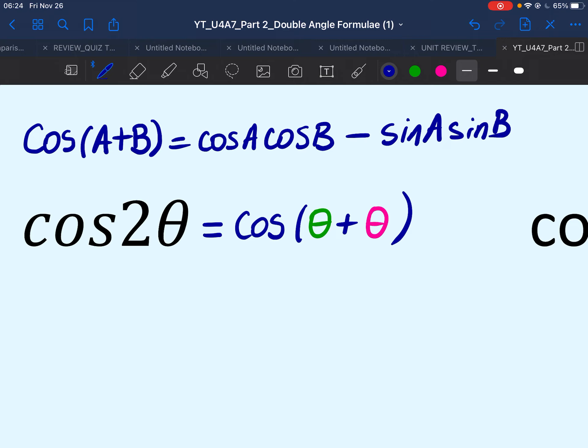So in our case, we'll say that cos theta plus theta would be cos theta cos theta minus sin theta sin theta.